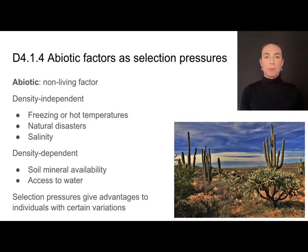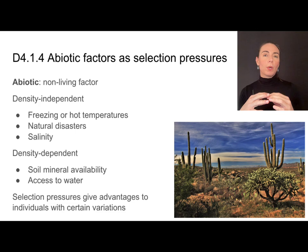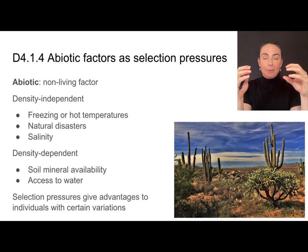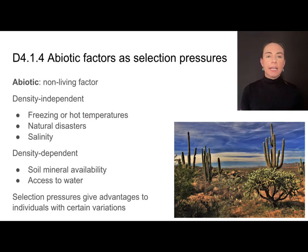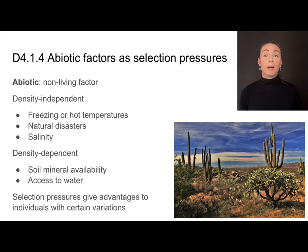Density-independent means it does not rely on the density of the population — it doesn't matter what the population size is or how densely populated an area is, these factors will drive natural selection processes all the same. Examples include temperature, natural disasters, or things like the salinity of the soil. Temperature, for instance, is going to drive natural selection regardless of whether other organisms are nearby.